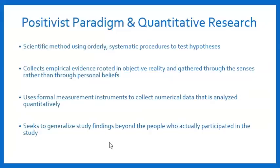Quantitative research is an orderly, systematic process used to test hypotheses, collecting data in a very controlled manner. The evidence produced within quantitative research is called empirical evidence — it is objective rather than subjective, gathered through the senses using detailed prescriptive methods, not based on personal beliefs. The idea is that if two researchers with the same training and the same data collection instrument both observed a participant, they should collect the exact same data. That's objective data — it doesn't take personal thoughts, feelings, or beliefs into account.